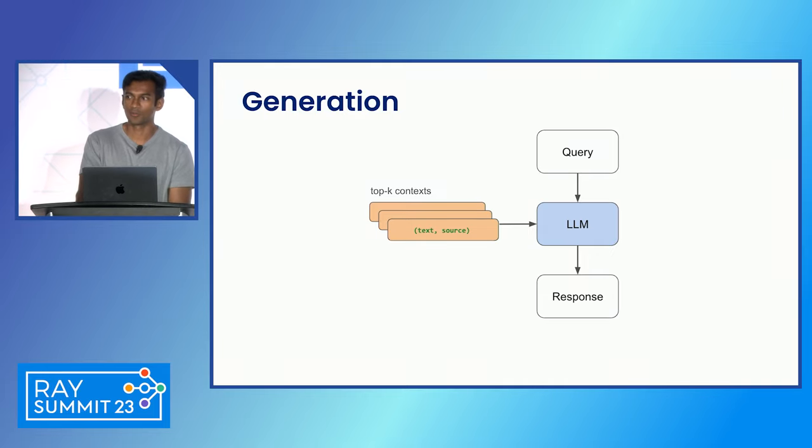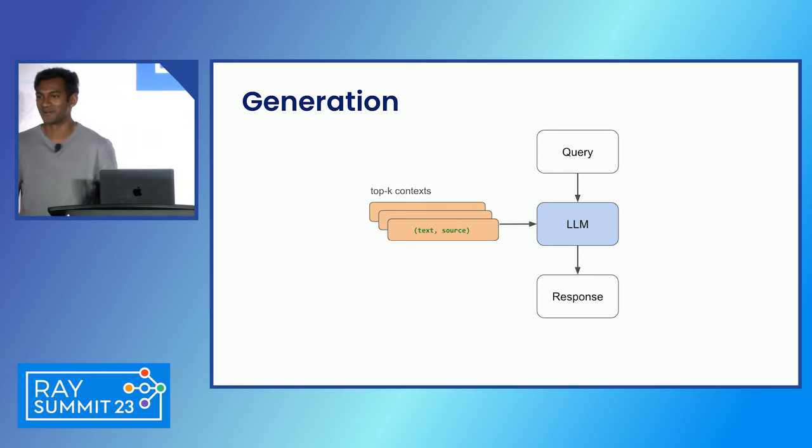We'll talk about how to update that in a second. But to actually now do the retrieval, you have a query. You embed the query using ideally the same embedding model and you have a query embedding now. Now you can pass that over to the database and use different distance metrics. We use cosine similarity to retrieve the top K chunks from this. And once you have the chunks, now you can feed in the text from the relevant sources and the query itself to the LLM and get the response. So any questions so far with this V1?